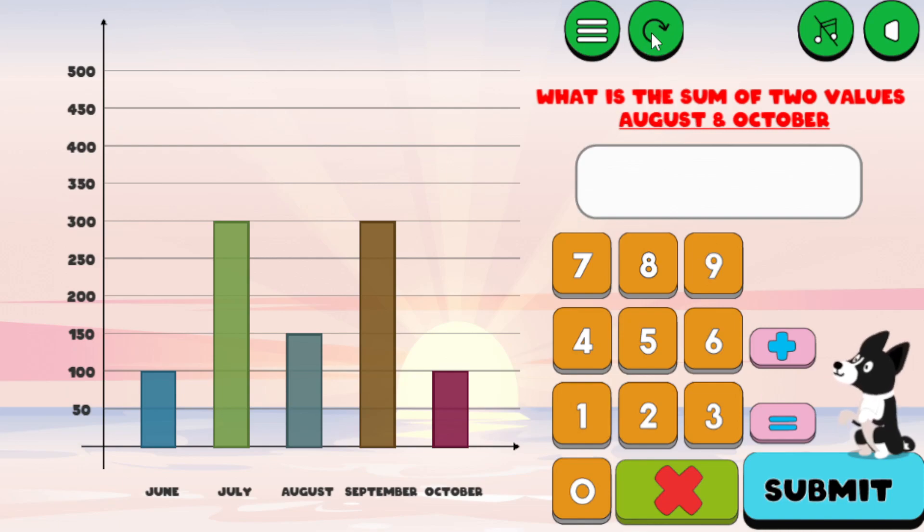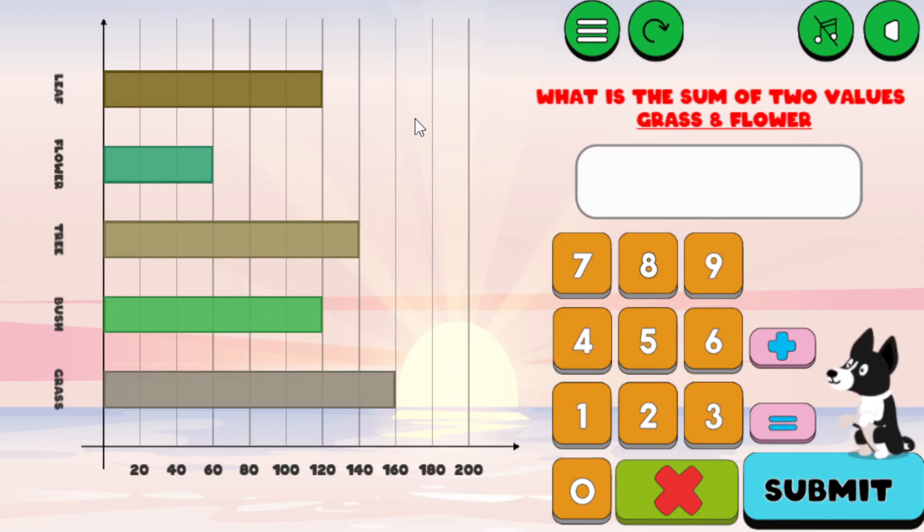And let's go ahead and click another one. Okay, this is a little bit different now, because now the bars are going horizontally versus vertically. And now you see the numbers are a little bit harder to add in your head. So what is the sum of the two values, grass and flower? So that's 60 and 160. I know that's going to be 220, because I do that in my head, but let's go ahead and hit 160 plus, that's grass plus flower, is 60. And I'm getting these values. You can see grass goes all the way out to 160, and flower goes to 60, and let's hit equal, 220.